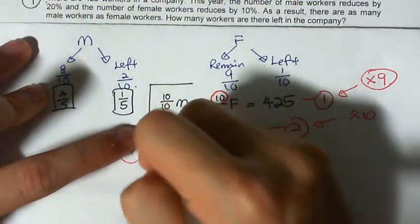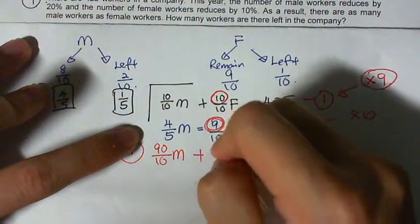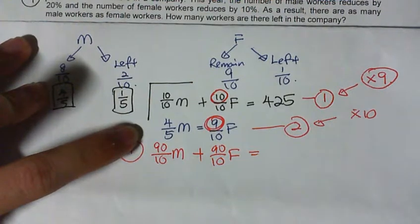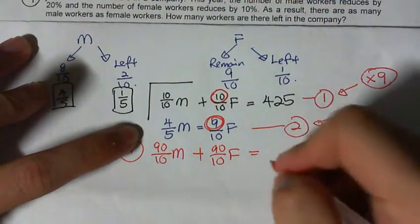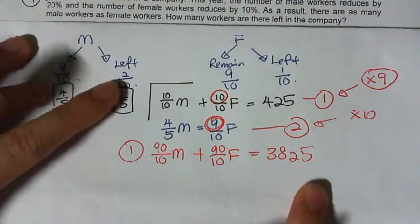So let's say the first equation, what do I get? Times 9. 9 times 10, I get 90 over 10 m plus 90 over 10 female equals to 425 times 9, which is 3825. So this is my first set of equation.